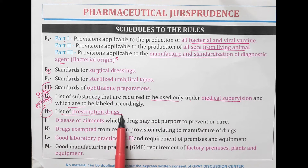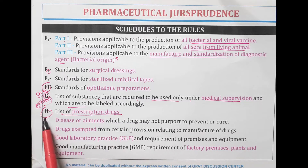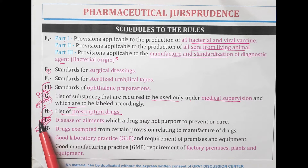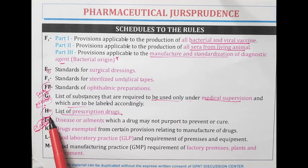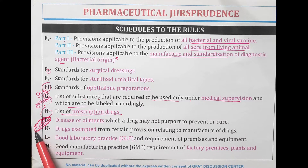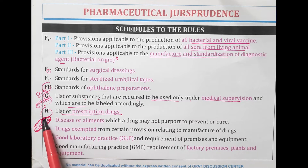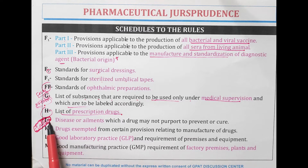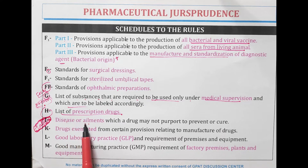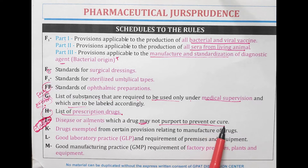Schedule H is the list of prescription drugs. Schedule J — J for Japan and the incident which happened in Japan and Nagasaki was still incurable. Therefore, Schedule J contains the list of diseases or ailments for which a drug may not purport to prevent or cure. J is the list of incurable diseases.